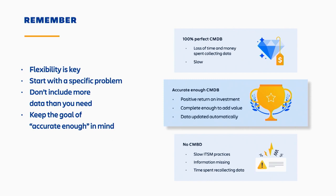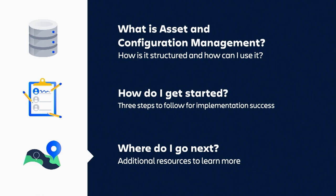As a summary, flexibility is the key. Start with a specific problem. Don't include more data than you need and keep the goal of 'accurate enough' in mind — you don't need all of it. Aiming for a 100% perfect CMDB would take too long. Not having a CMDB is not an option today, so an 'accurate enough' CMDB should be the goal. Don't boil the ocean — we've seen a lot of CMDB failures over the last decade by people trying to put everything in.